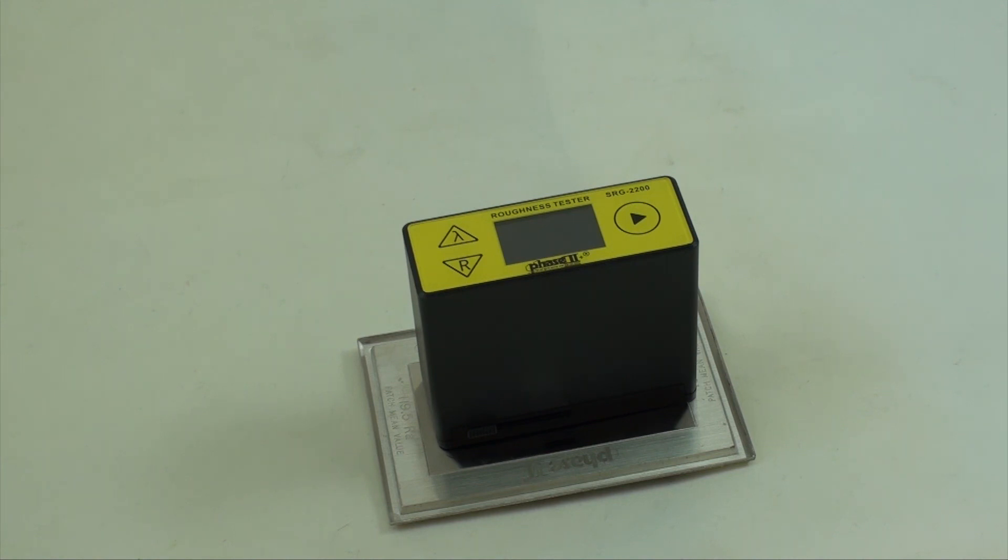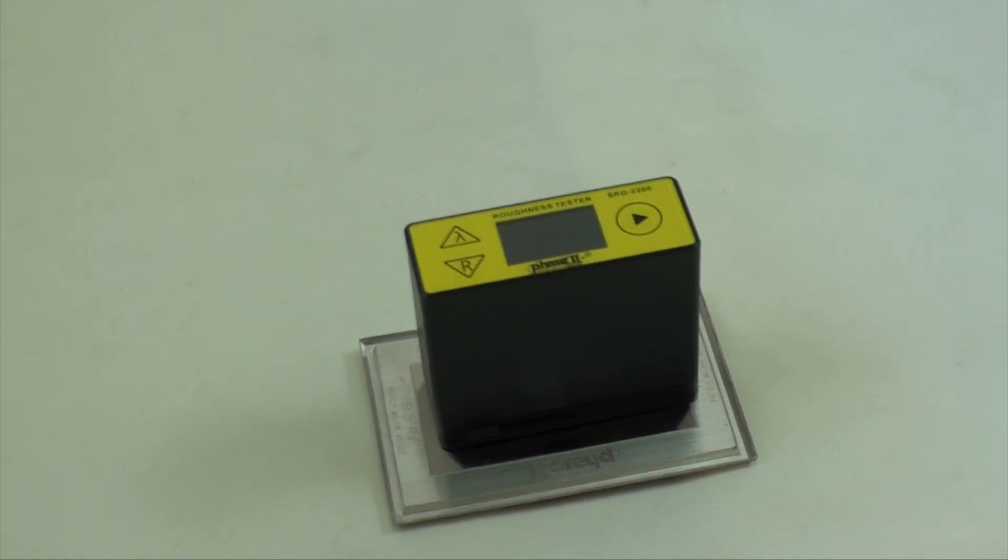These include maximum surface roughness of 10 microns or 400 micro inches. As you can see, the SRG2200 is a handheld battery-powered instrument with graphic display and controls in the front and a built-in stylus that moves forward and returns upon taking surface roughness samples automatically.